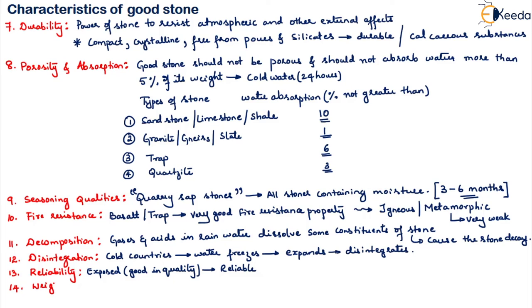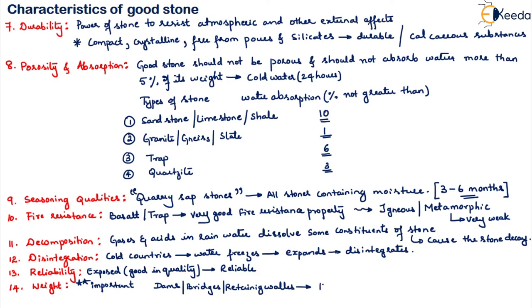The fourteenth property is weight, which depends on the type of structure in which the stone is used. For dams, bridges, and retaining walls, we should go for heavier stones. For arches, walls, and domes, we have to go for lighter stones.